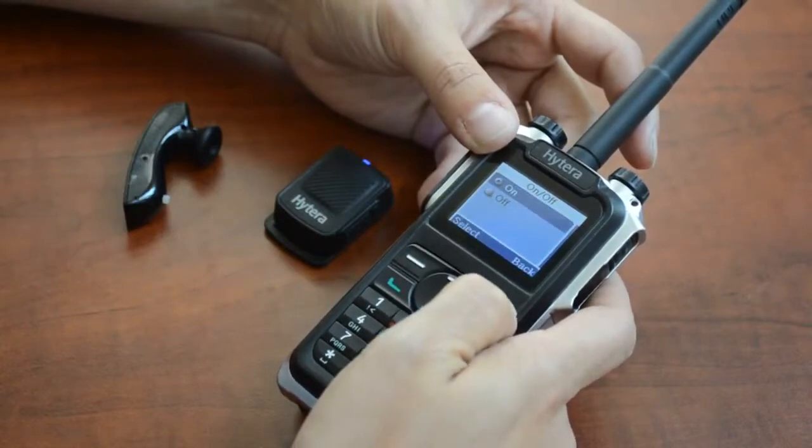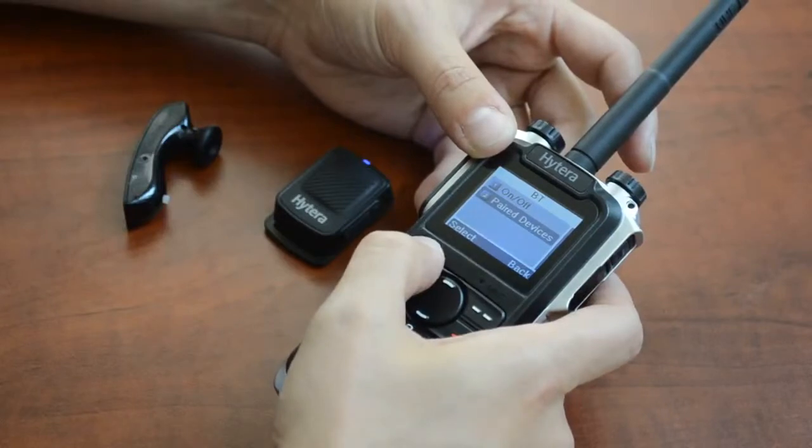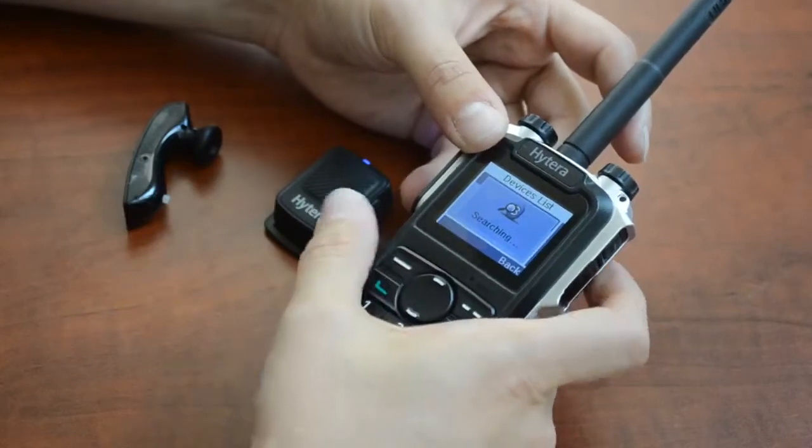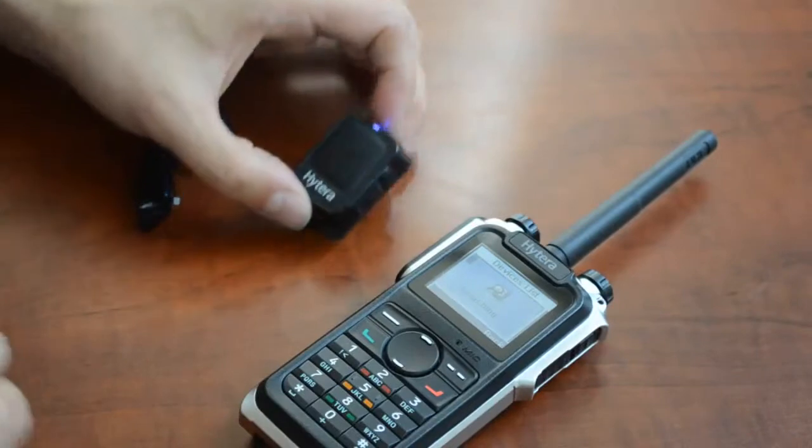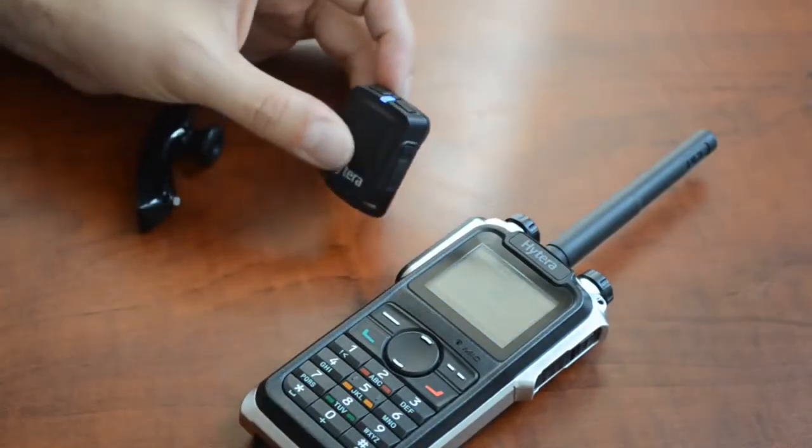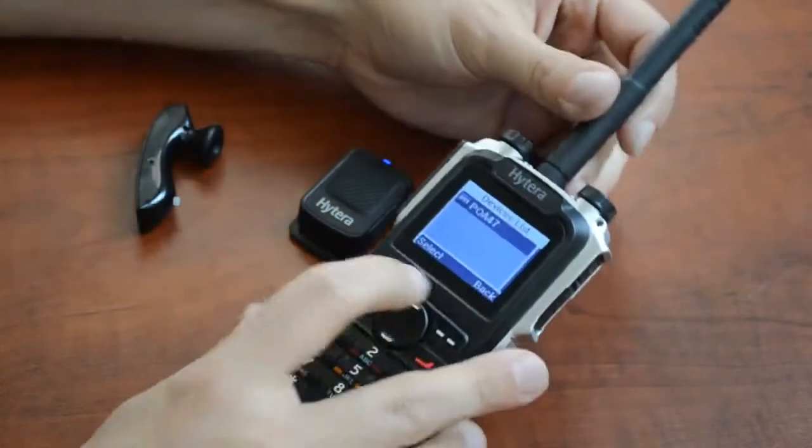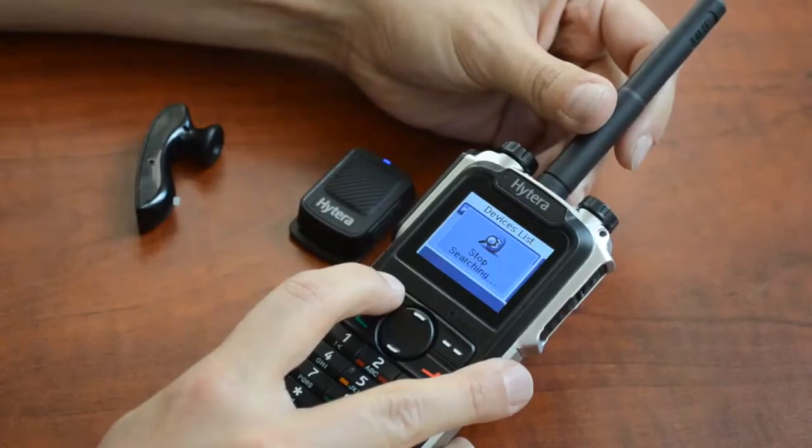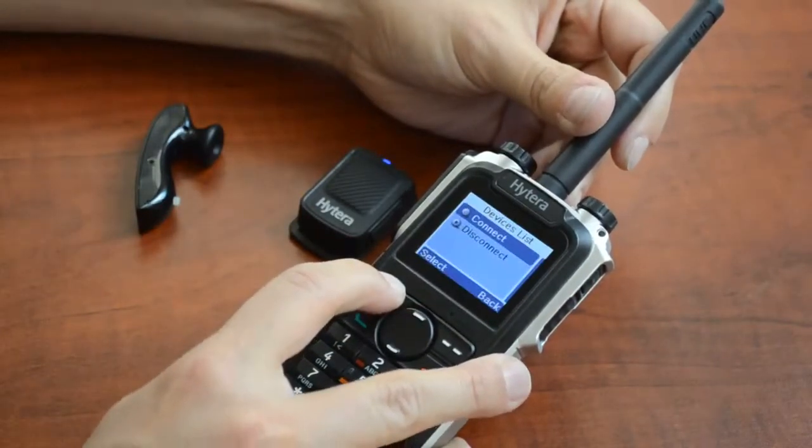Once you've done that you can push back and then go to paired devices and then select search PTT. The X1P is now searching for the wireless PTT POA47. As you can see it's found the POA47. You can press select to select it and then you can go to connect and select connect.